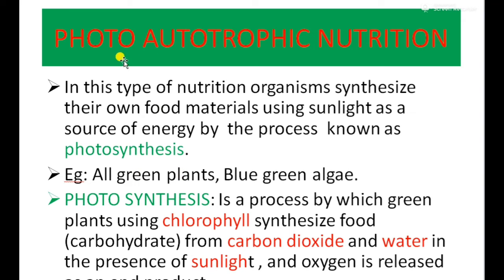Green plants synthesize their own food by a process known as photosynthesis. 'Photo' means light. Light consists of small packets of energy known as photons. That energy is captured by the chlorophyll molecules, which convert carbon dioxide into carbohydrates. Photosynthesis requires chlorophyll, carbon dioxide, water, and sunlight — these four factors are responsible for photosynthesis.